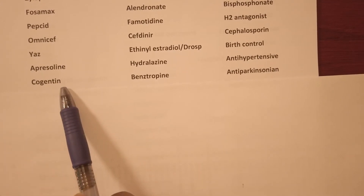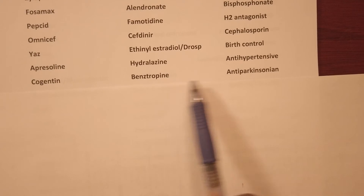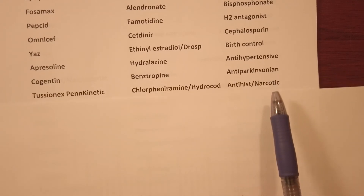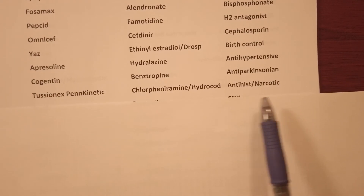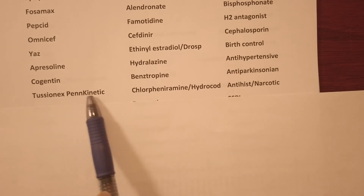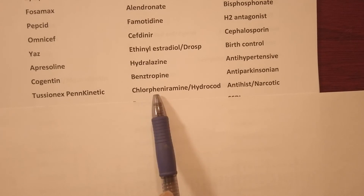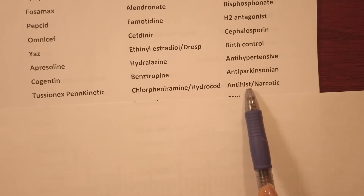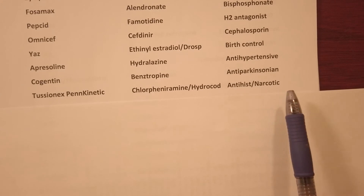Cogentin, generic name benztropine, it's an anti-Parkinson drug. Tussionex, generic name — it's a combination of chlorpheniramine and hydrocodone — it's an antihistamine narcotic cough medication.